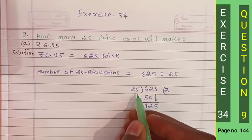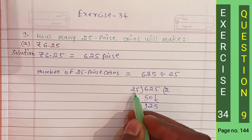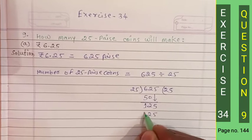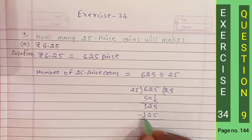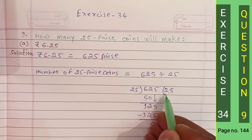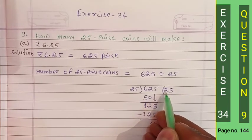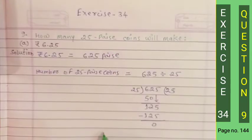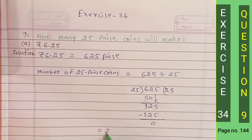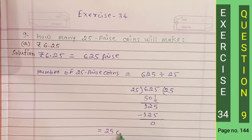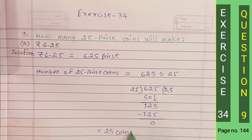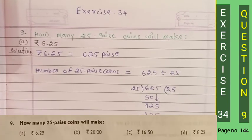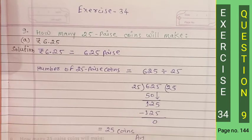Again we count the table of 25 — five 25s are 125. That means we can make 25 coins of 25 paise. So the answer is 25 coins. In the same way, you can solve the remaining questions.